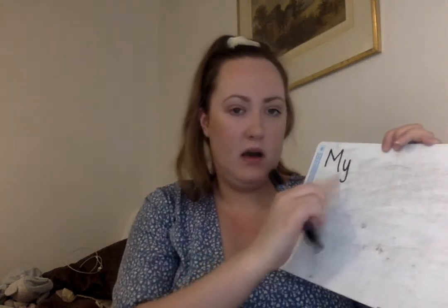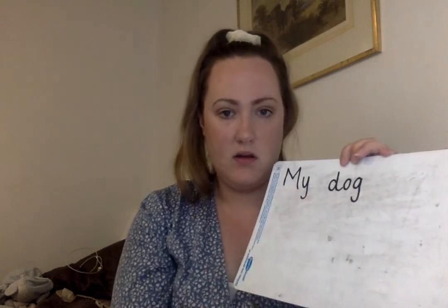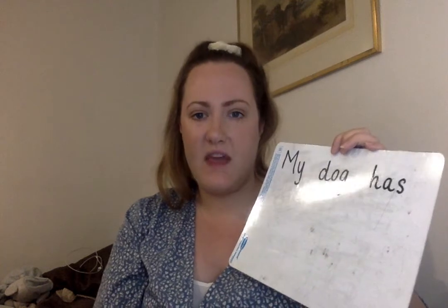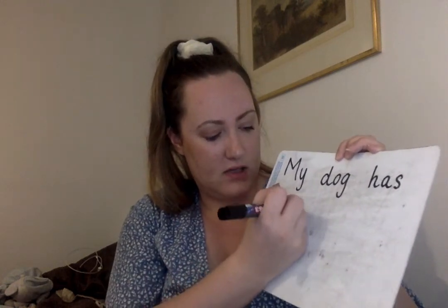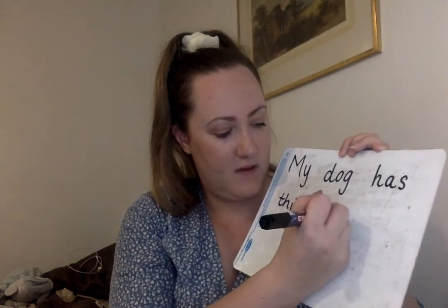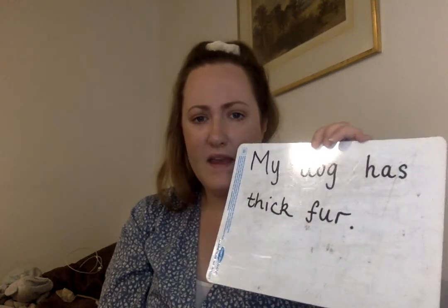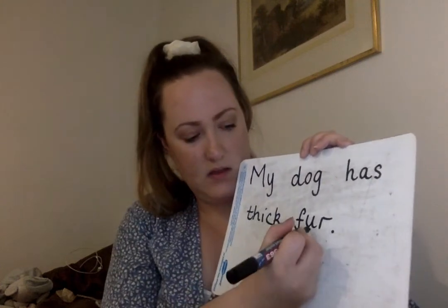Okay, let's have a go with 'My dog has thick fur.' My - tricky word - M-Y spells my. Finger space. Dog - D-O-G. Has. Thick - T-H-I-C-K. Fur - F-U-R - with a full stop. Can you have a look at your sentence? Where is the 'ur' sound in this sentence? It is here in the word 'fur.'